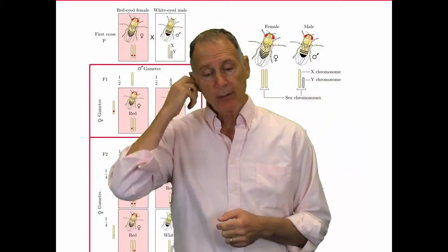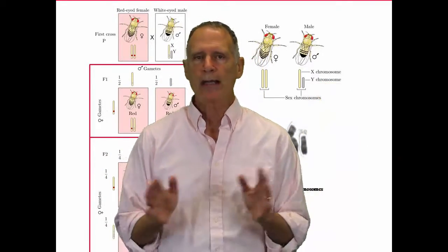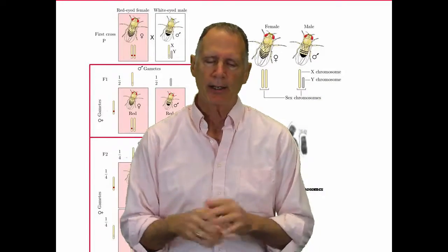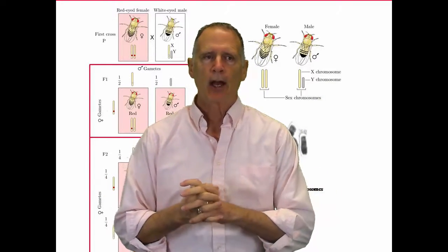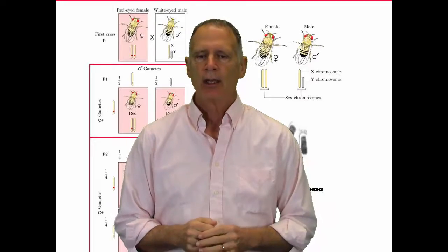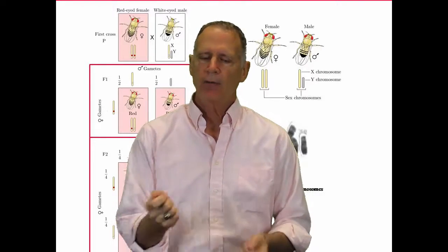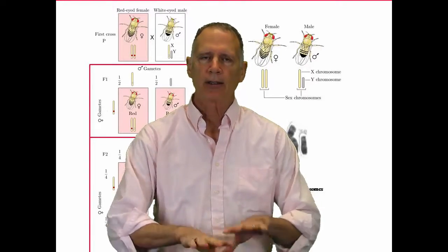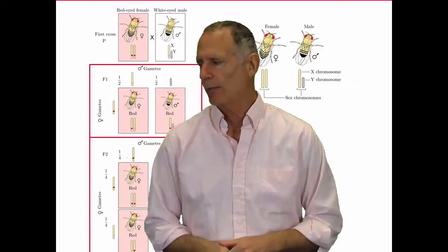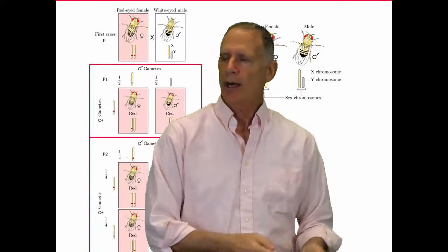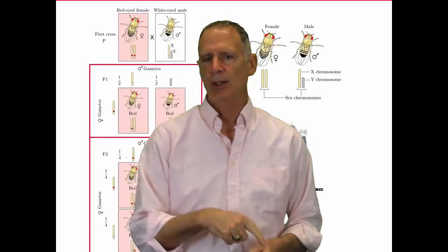What Morgan did was he discovered a white-eyed fly, a male fly. As the story goes, the fly was on its deathbed almost. He very carefully puts it in with the female. I think the last thing the fly did was mate and then die. But he got his white-eyed trait passed on.